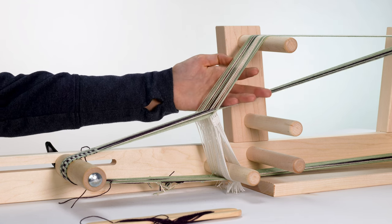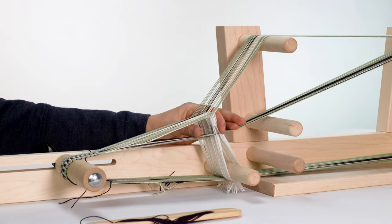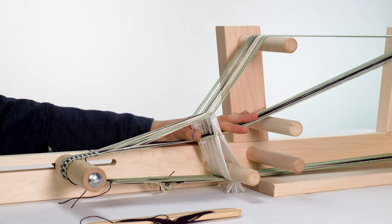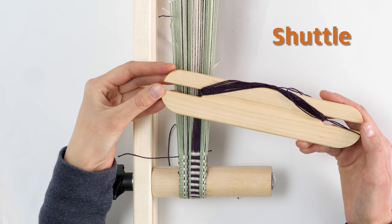We can create the opposite shed by pushing the open warp threads down. Our weft thread is held on a shuttle that we place through the shed.